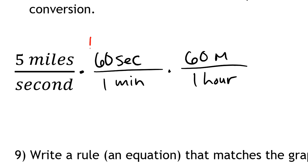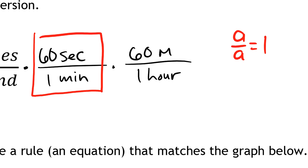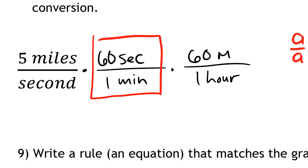Let me just explain here. This is equal to 1, right? 60 seconds is the same as a minute. So if I have anything divided by itself—A divided by A—it's just equal to 1. I'm multiplying my 5 miles per second times the number 1, so I'm not changing its value, I'm just changing its format.